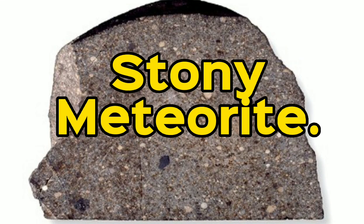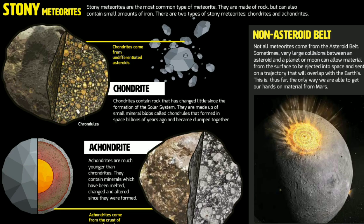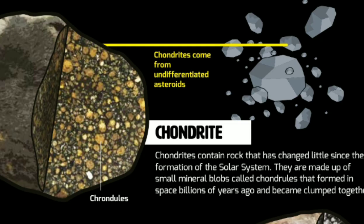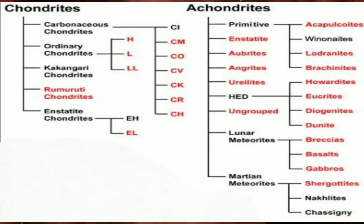The majority of meteorite finds are stony meteorites, consisting mostly of silicate minerals. There are two main types of stony meteorite: chondrites, some of the oldest materials in the solar system, and achondrites, including meteorites from asteroids, Mars and the Moon. Both chondrites and achondrites have many subgroups based on their compositions, structures and the minerals they contain.